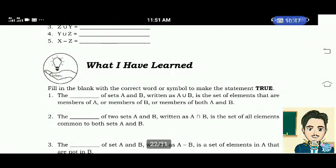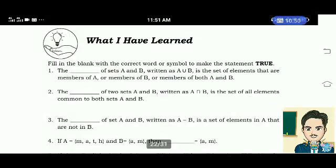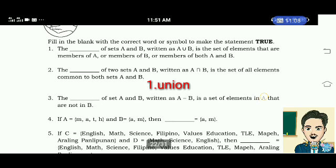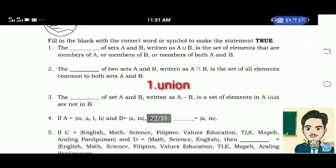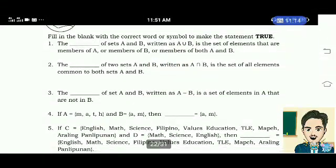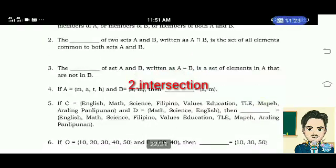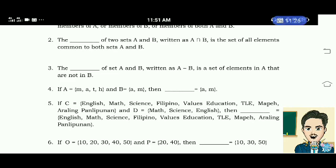What I have learned. Fill in the blank with the correct word or symbol to make the statement true. Number 1: The union of sets A and B, written as A union B, is the set of elements that are members of A or members of B or members of both A and B. Answer: Union. Number 2: The intersection of two sets A and B, written as A intersection B, is the set of all elements common to both sets A and B. Answer: Intersection. Number 3: The difference of set A and B, written as A minus B, is a set of elements in A that are not in B. Answer: Difference.